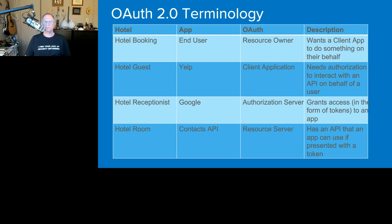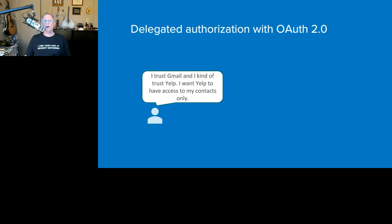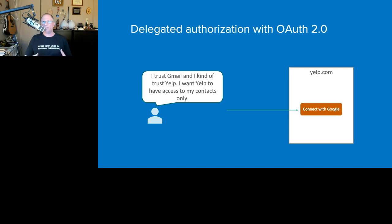In a modern app using OAuth 2, what we're really saying is: I trust Gmail, that's where my Google credentials are supposed to go. And I kind of trust Yelp — I want Yelp to have access to my contacts only. So instead of a form where I put my username and password, I now have a friendly 'Connect with Google' button that enables Yelp to obtain an access token on my behalf.